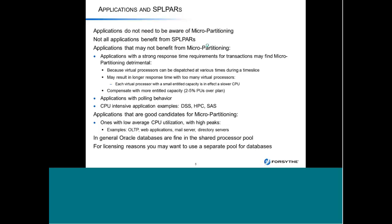Whereas in a dedicated core, when dispatched I could get the whole 10 milliseconds of the dispatch window. We care about that if we have jobs that are long-running and speed-dependent, because they're going to want to run as long as possible until they do I/O or run out of the dispatch window. Good candidates for the shared processor pool include OLTP, web applications, and mail servers. The real challenge is with very long-running CPU-intensive applications — high performance compute, SAS, SPSS — those workloads. You may be better off running those in dedicated cores to get a longer dispatch window.